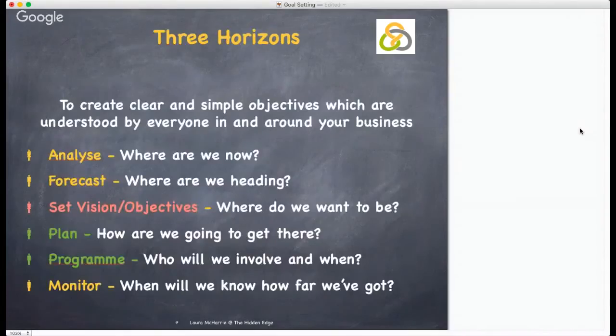These three horizons help you to create clear and simple objectives, which are then understood by everyone in or around your business. It allows us to analyze where we are now, forecast where we are heading, set some visions and objectives of where we want to be, plan how we are going to get there and who will be involved and when, and then what we will need to do to monitor it.